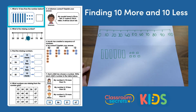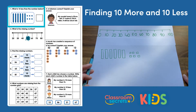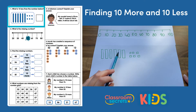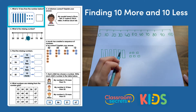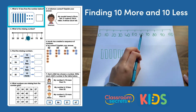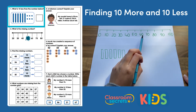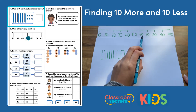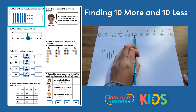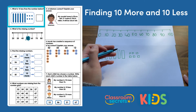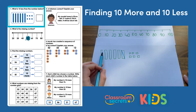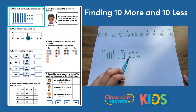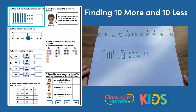The first question: what is 10 less than the number below? Let's count up our number — it's been shown in base 10: 10, 20, 30, 40, 50, 60, 1, 2, 3, 4, 5, 6. The number is 66. I want to work out 10 less, so we know the 6 ones will stay the same. 10 less would be 56. We can check that by crossing out one of the tens: 10, 20, 30, 40 — 56. 10 less is 56.